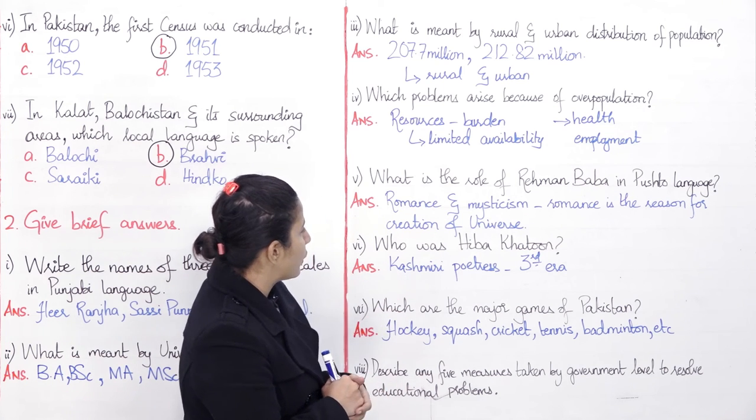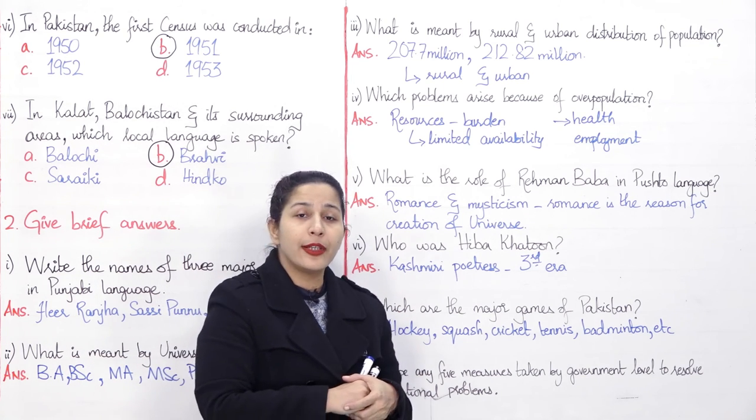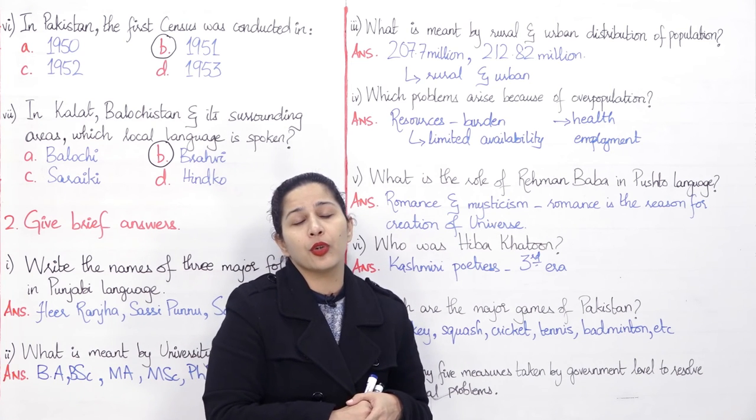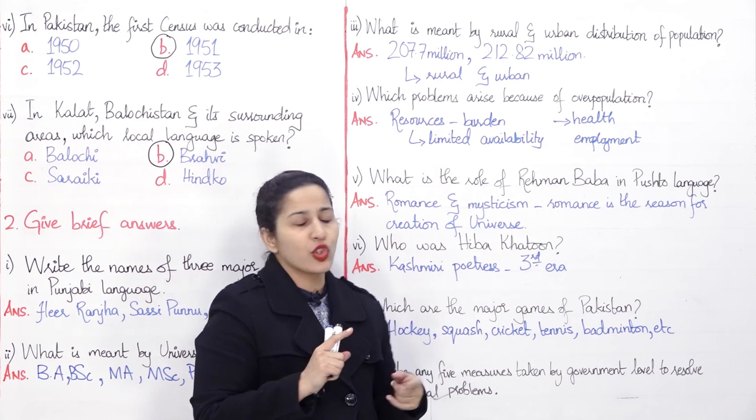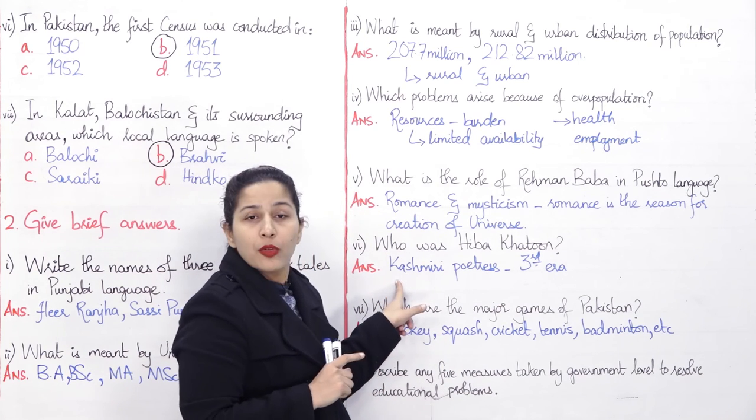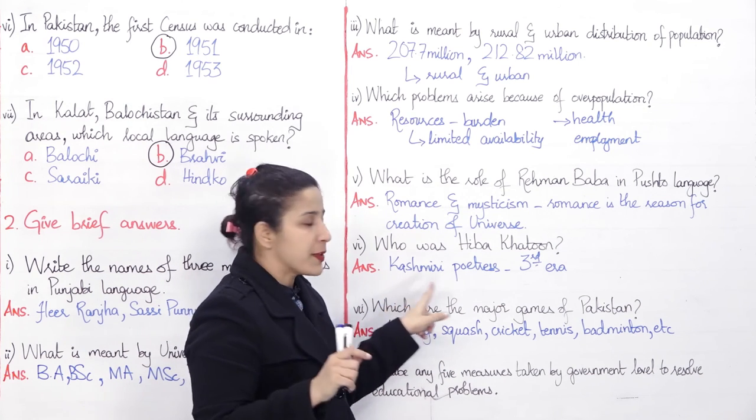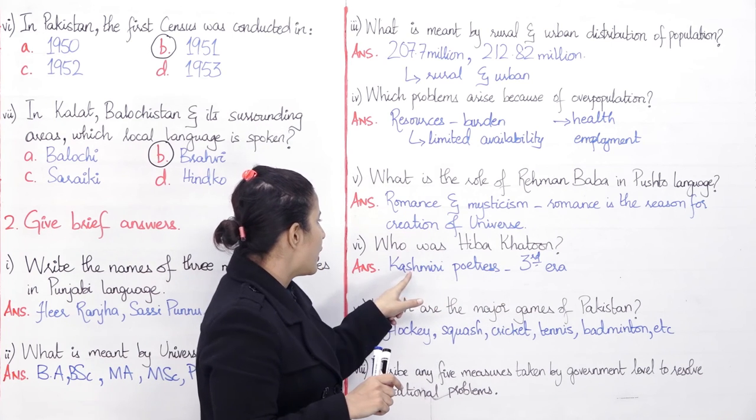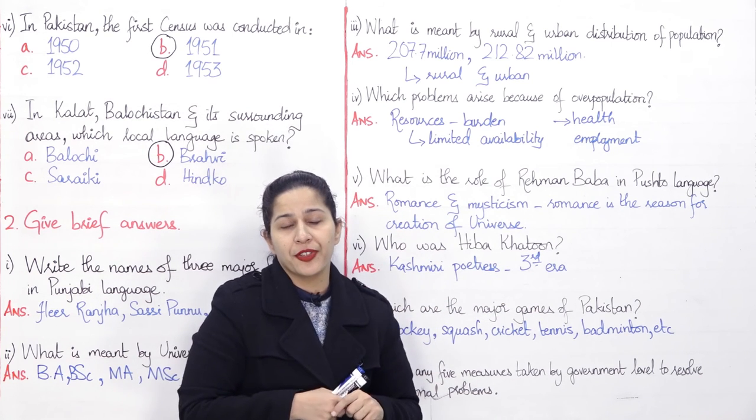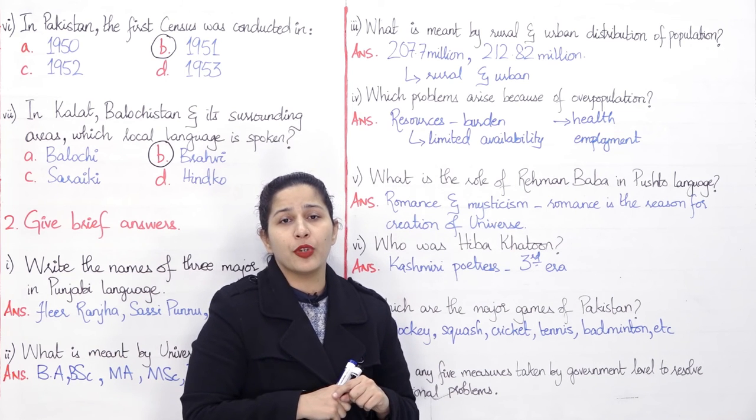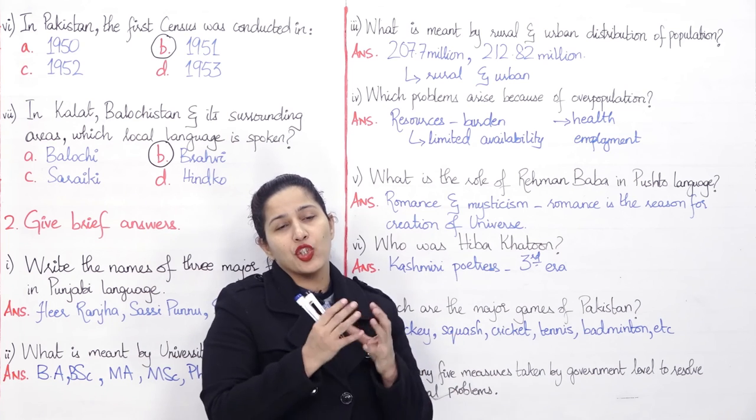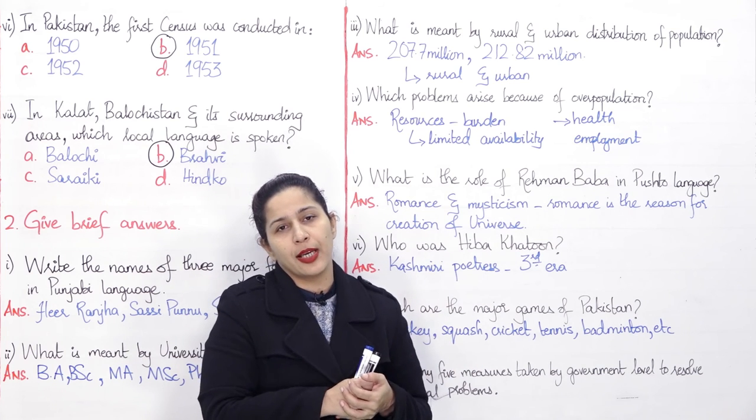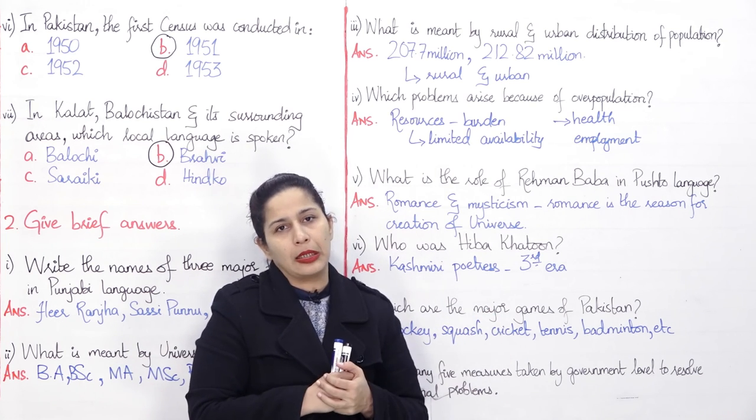Sixth question: Who was Hiba Khatun? Recall where we discussed her. We discussed her in the Kashmiri language section, when we discussed the development in five eras. In the third era, Hiba Khatun was a Kashmiri poetess. Her important contribution was that in the third era, stories were given a poetic touch in Kashmiri language, and she had a major role in that.